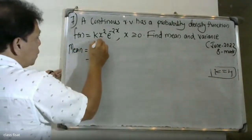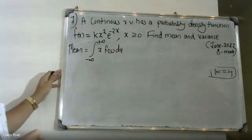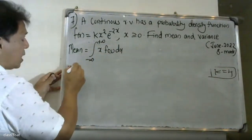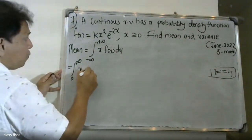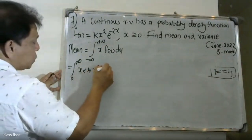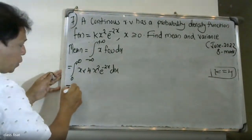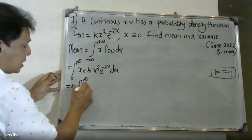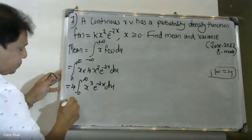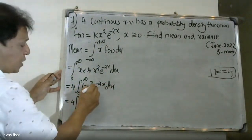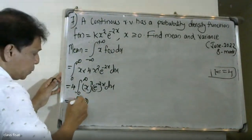Now we find the mean. The mean, or expectation of x, is equal to the integral from minus infinity to plus infinity of x times f(x) dx. With our PDF, this becomes the integral from 0 to infinity of x times 4 x squared e raised to minus 2x dx, which is 4 times the integral of x cubed e raised to minus 2x.